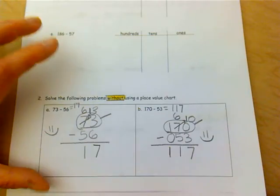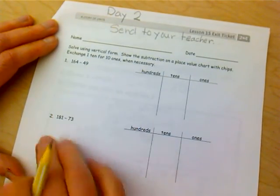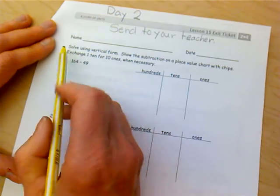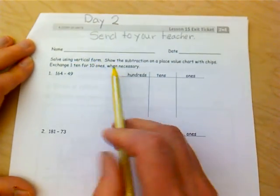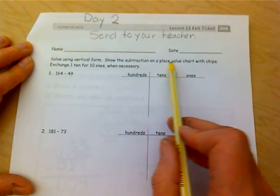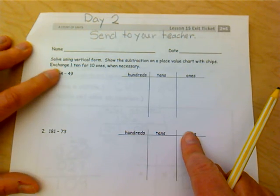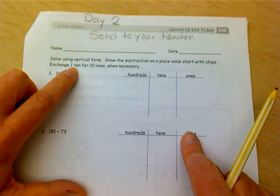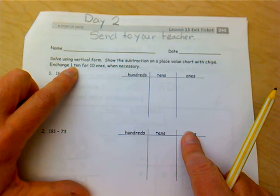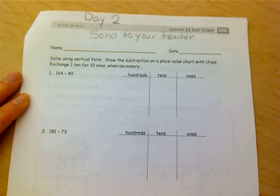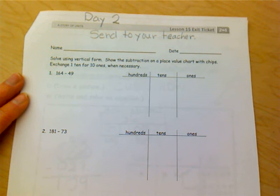Once you have corrected all of this and you feel confident in what you're doing, then you need to come over and do these two problems. You're going to solve using the vertical form, show subtraction in the place value chart with your chips, and if you need to exchange or decompose or unbundle a 10 for 10 ones, do it if it's necessary. And then of course send that to your teacher.